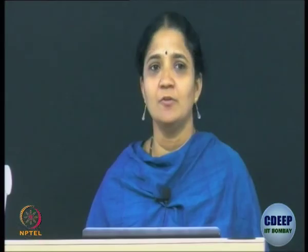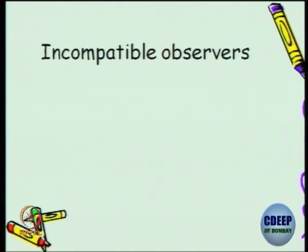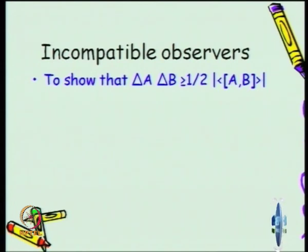Before I get on to this, I thought I should complete what we said in the last lecture about incompatible observables — not observers. Incompatible observables are two linear operators, Hermitian operators, whose commutator bracket will be nonzero. We saw that in that specific case, you want to show that the standard deviation of operator A multiplied by the standard deviation of operator B is greater than or equal to the expectation value of the commutator bracket. If they are compatible then it will be zero, so you can simultaneously measure the two compatible observables — there is no disturbance, there is no uncertainty.